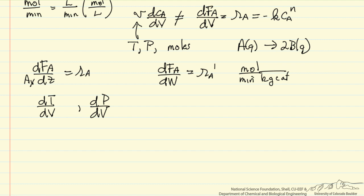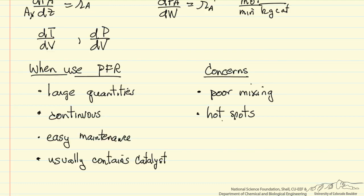So why would we use a plug flow reactor? When we use plug flow reactor: large quantities of material, so we're continuous and therefore large quantities. We want to do it continuously at steady state. It has an advantage, we don't have to worry about maintenance, there's no moving parts. And plug flow reactors typically contain catalysts.